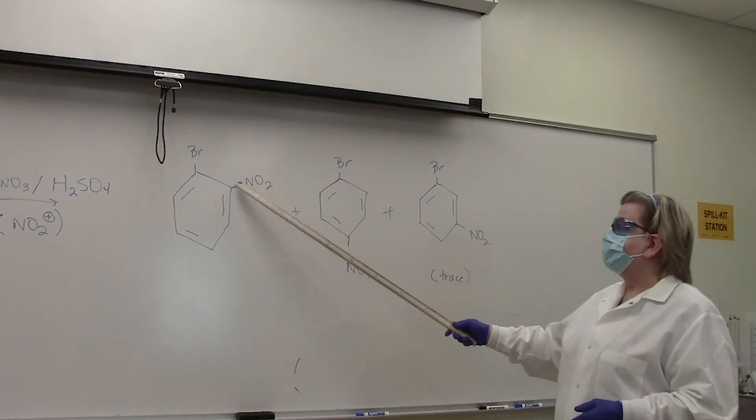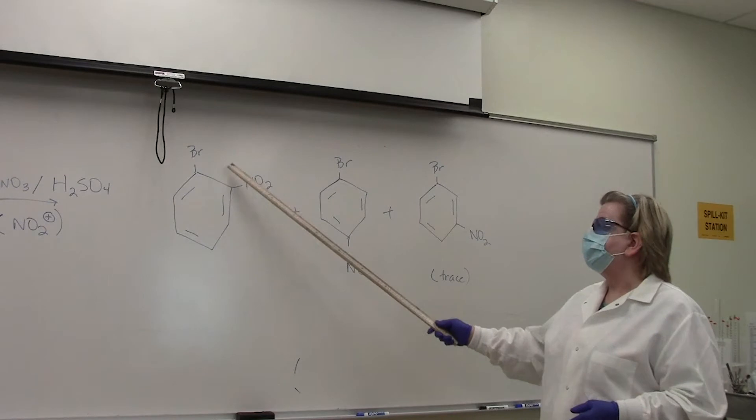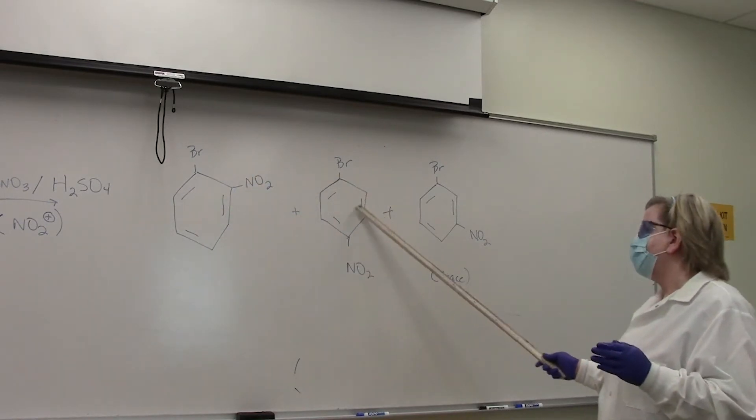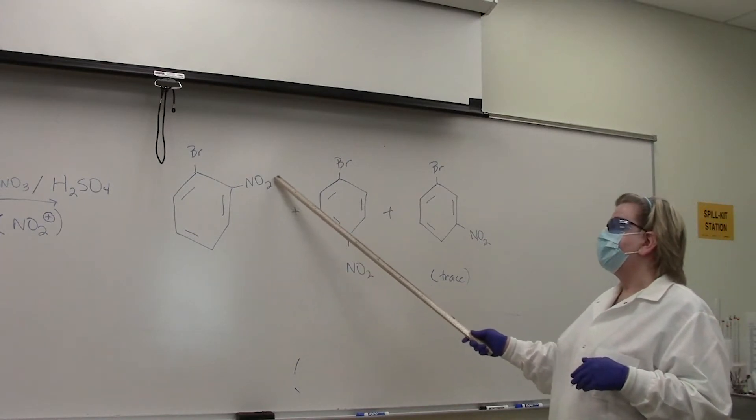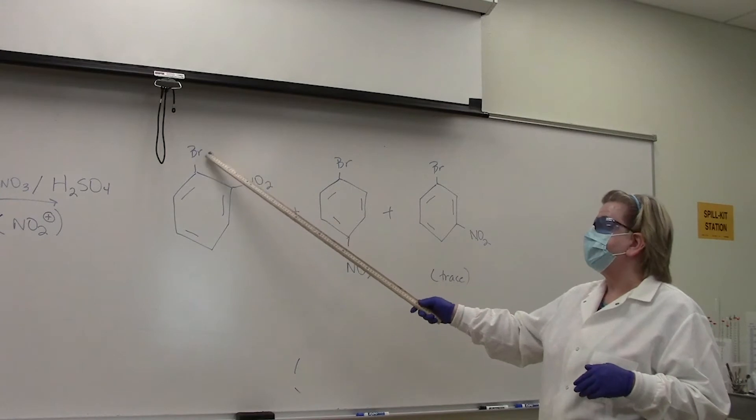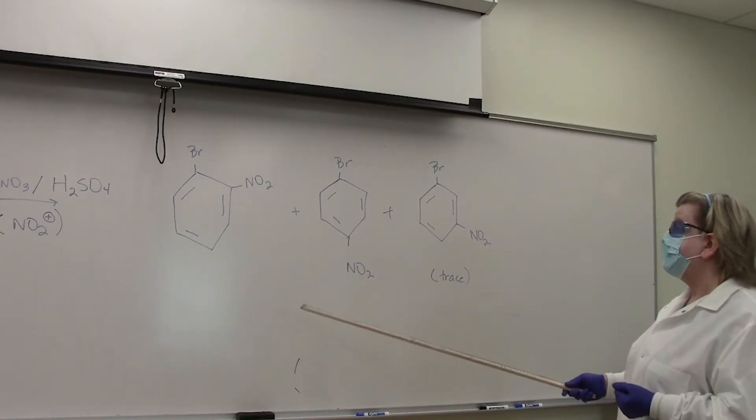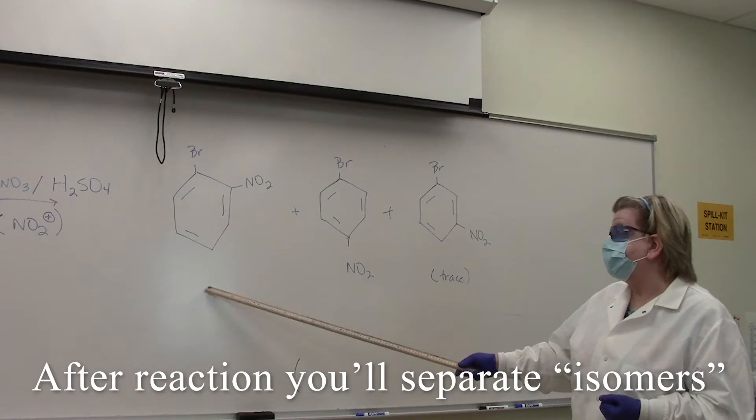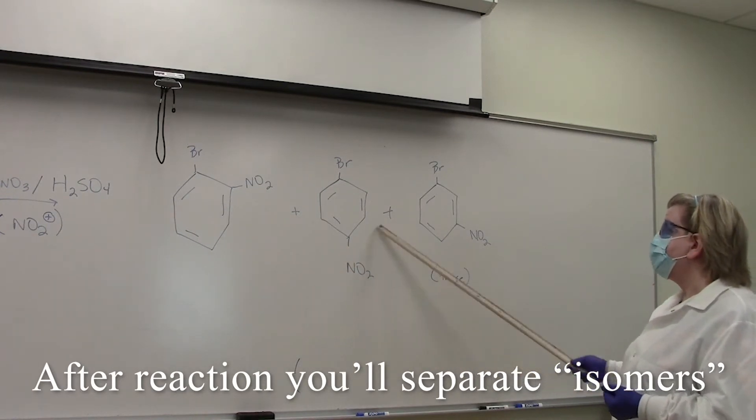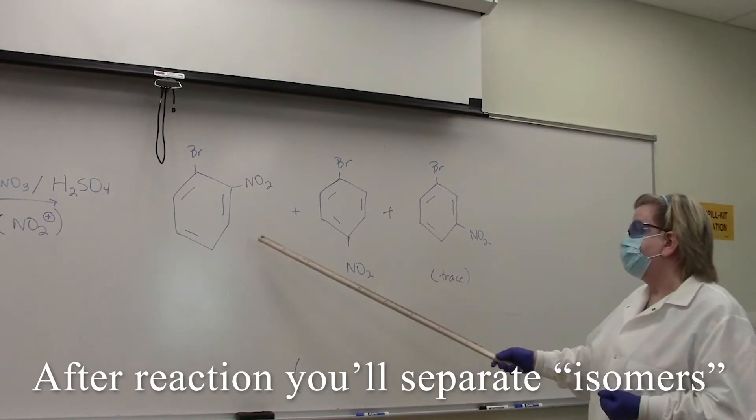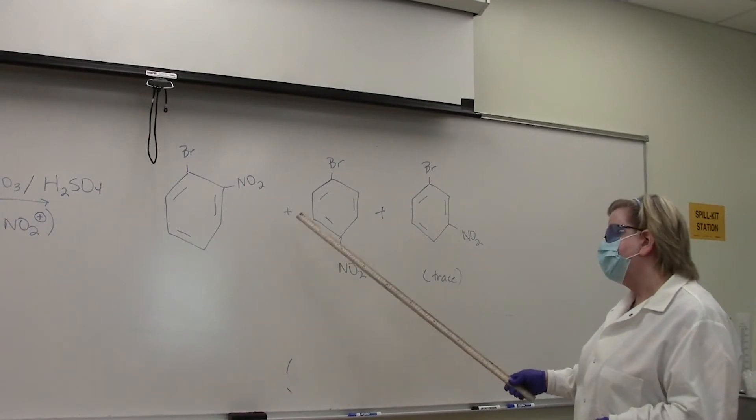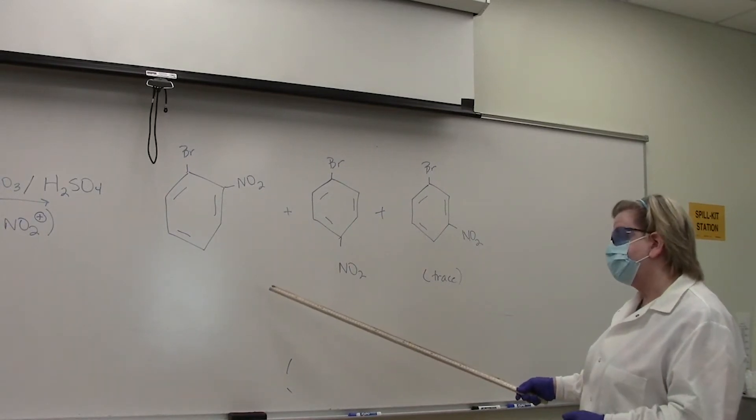You would think that since there's two ortho positions, we may have a greater statistical chance of getting more ortho compared to the para, but we also have to take into consideration the size of the nitro group and how easy it is to get next to the bromine, which is a fairly large atom. We're going to take a look at our yields today. Once we do the reaction, we have to isolate these isomers from each other, and the process we're going to use is fractional crystallization, not your typical recrystallization.